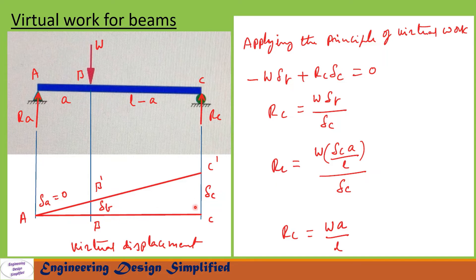Now let us write the virtual work equation. Minus W times delta_b — the minus sign is because W is acting vertically downwards and delta_b is in the upward direction. Plus Rc times delta_c — Rc is acting vertically upwards and delta_c is also in the upward direction. So the equation is: minus W times delta_b plus Rc times delta_c equals zero.